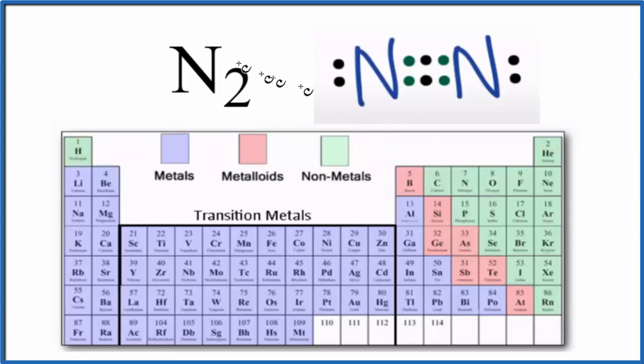When we look at the periodic table, we see we have nitrogen right here, and it's a non-metal. We have a non-metal and a non-metal bonded together. That's going to be a covalent compound, also called molecular.